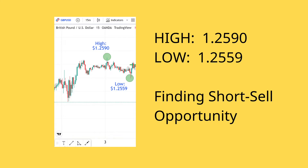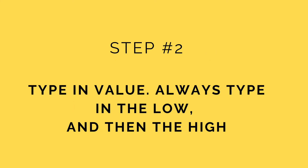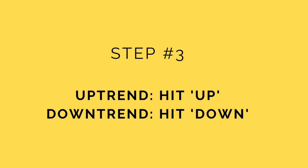Let's say you're finding a short sell opportunity. Step number two: type in the value — always start with the low and then the high. Step number three: if you're looking for an uptrend, hit up; and for a downtrend opportunity, hit down.